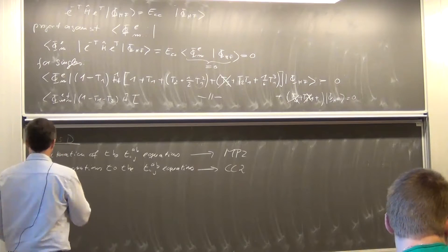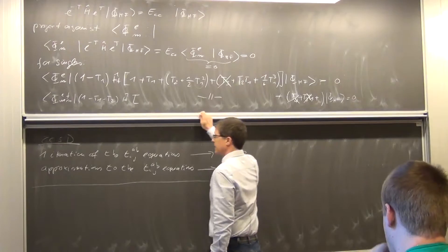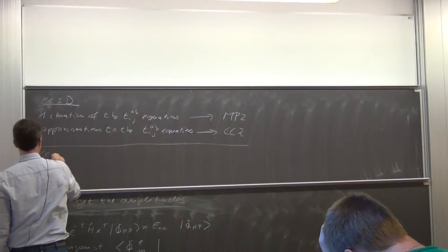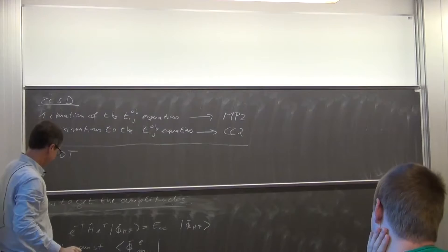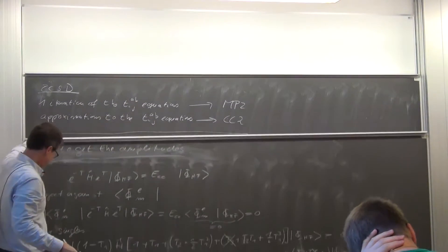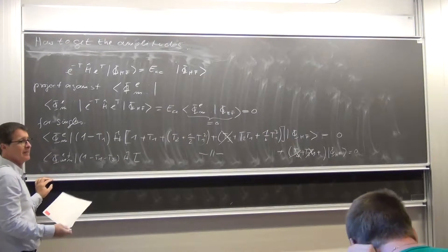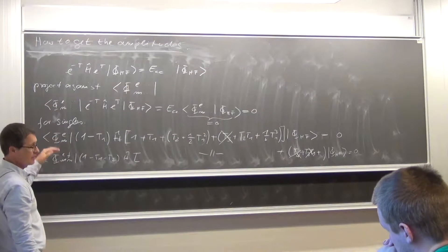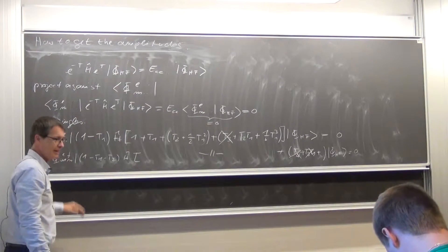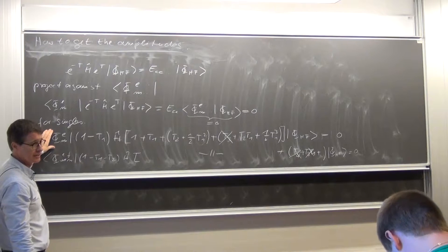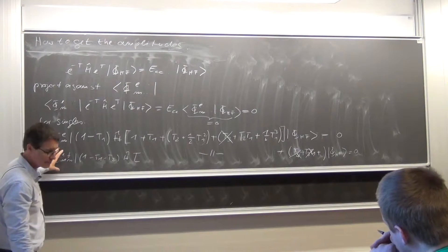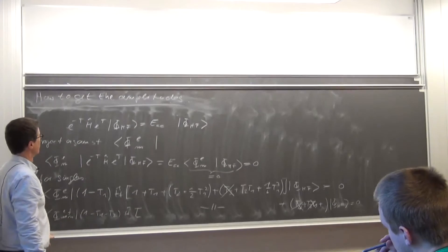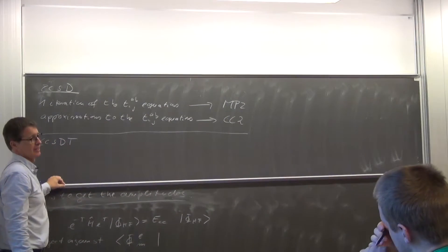The next higher level after CCSD would then be CCSDT with triples. And then you get another set of equations where you have all triple excited determinants. And from each level the number of equations increases dramatically. I mean, there are a few thousand, hundreds of thousand single excited determinants, millions of doubles and even more of triples. And you have to solve them all. So CCSDT is really expensive.